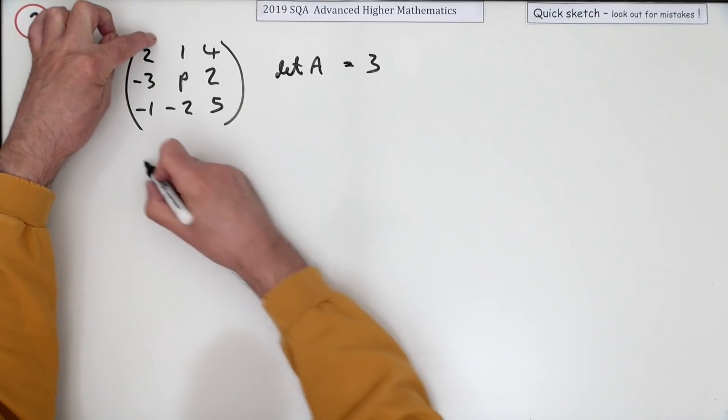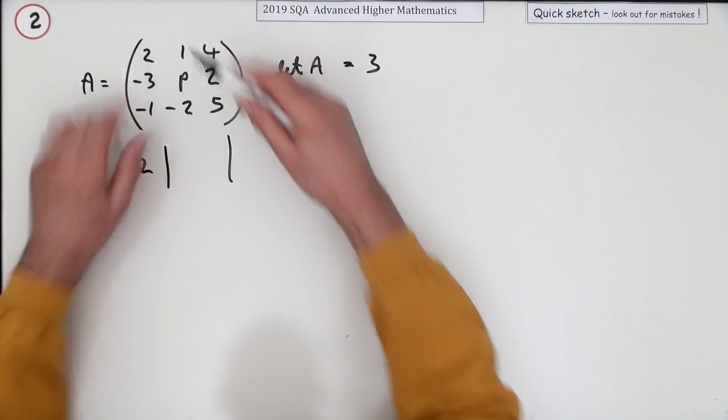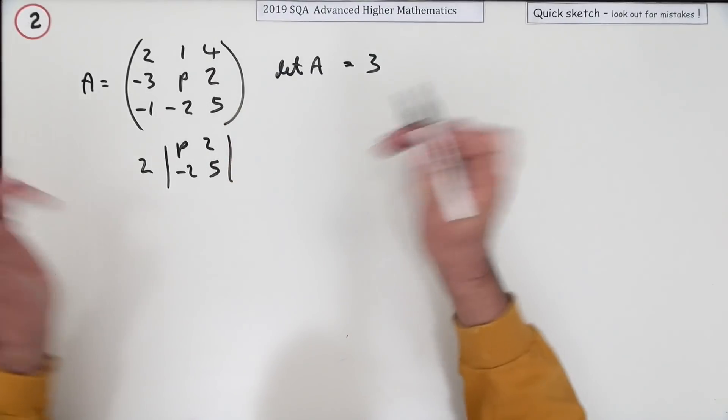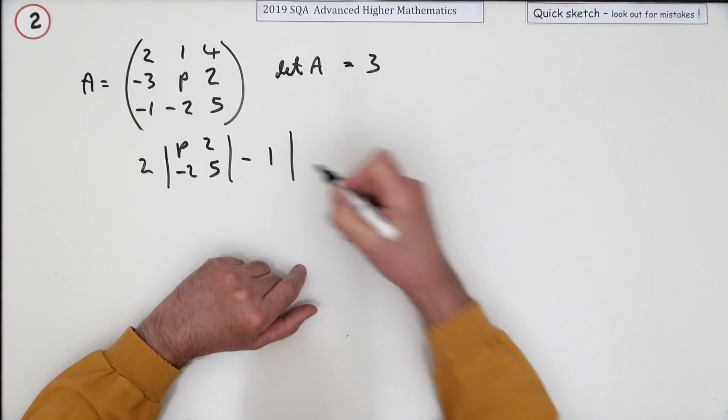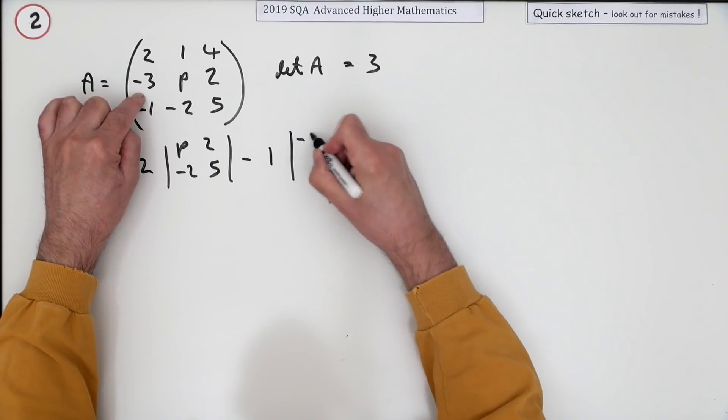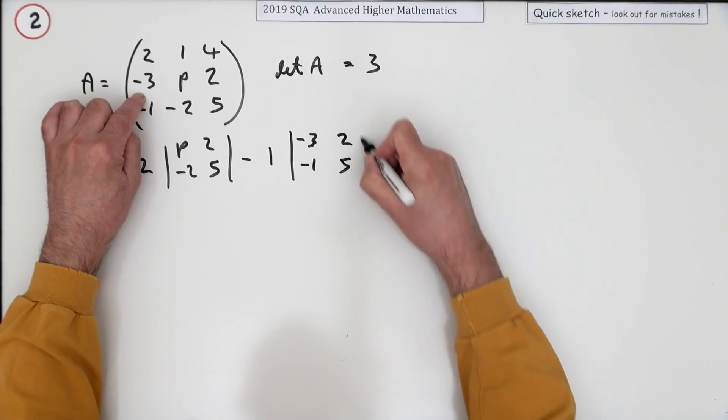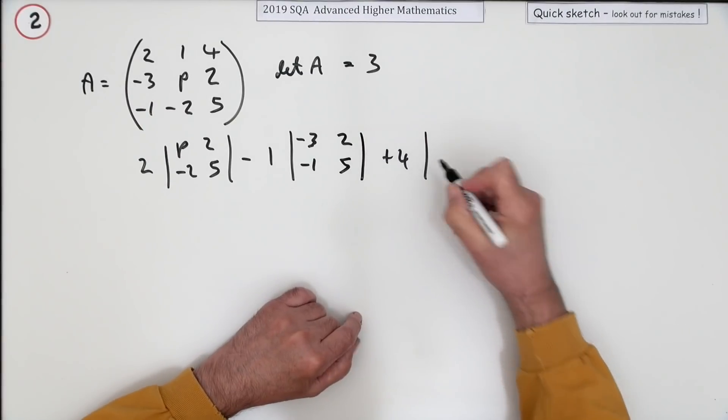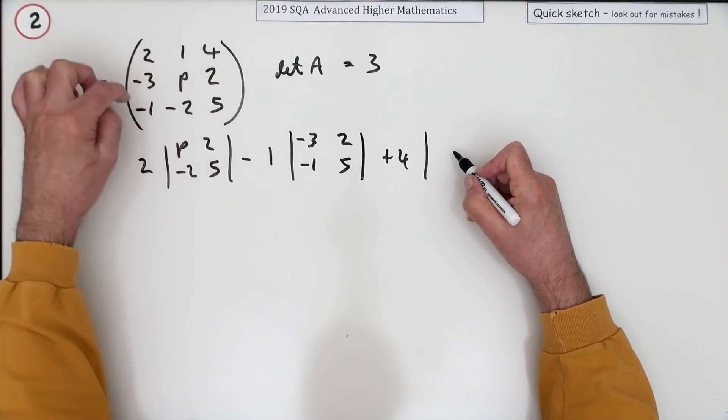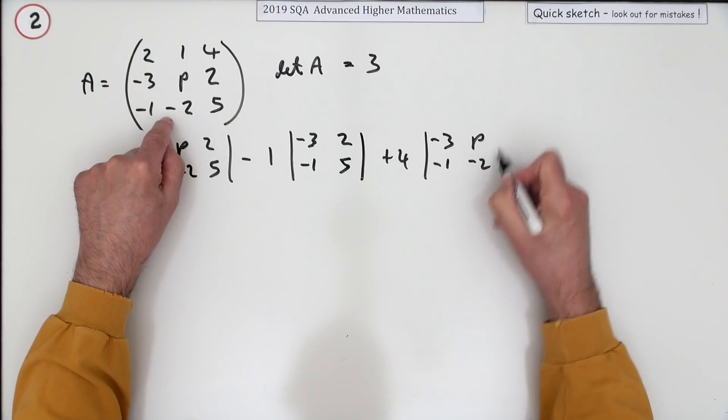So two times its minor formed by knocking out the row and the column—I'll spell it out just now although you could just do it in your head. Minus one times the minus being the sign of the minor, knock out the row and column, and its minor is the determinant of the little two by two matrix: negative three, two, negative one, five. Plus four, back to positive for this element times its minor which is knock out the row and column: negative three, P, negative one, negative two.